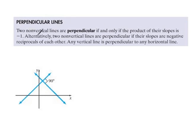Let's do it an easier way. Alternatively, two non-vertical lines are perpendicular if their slopes are negative reciprocals of each other. That right there is the key. Negative reciprocals of each other. That's what we're going to be looking for.